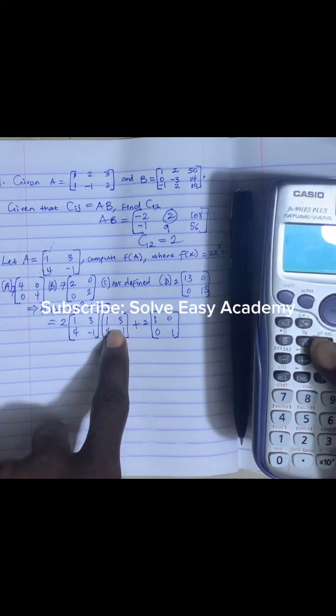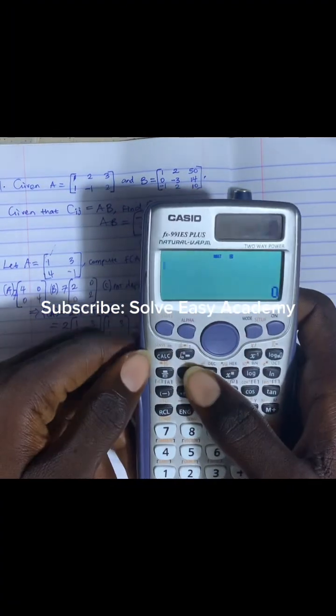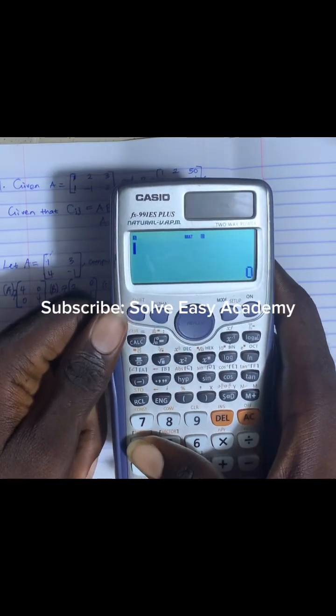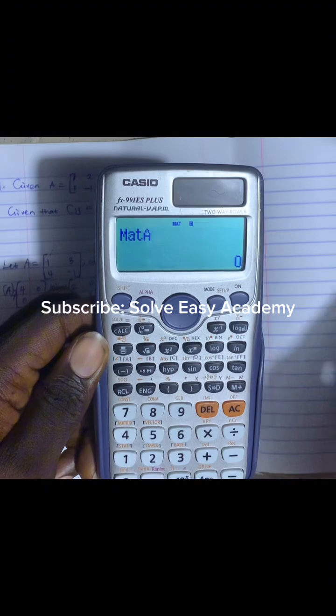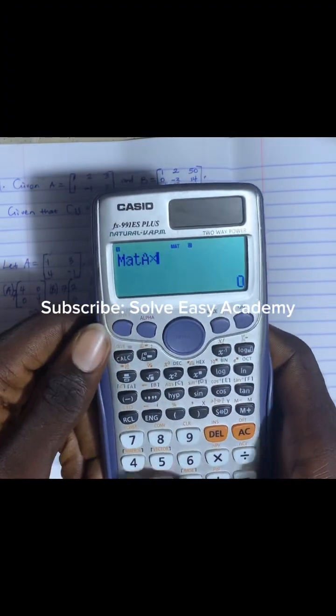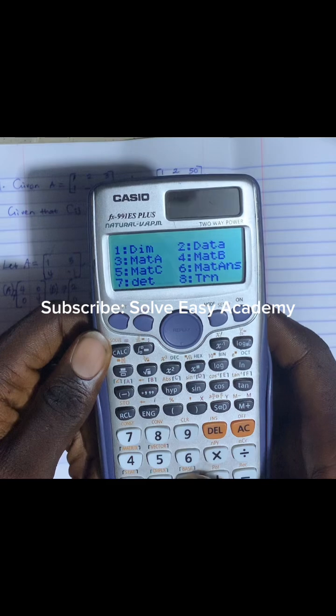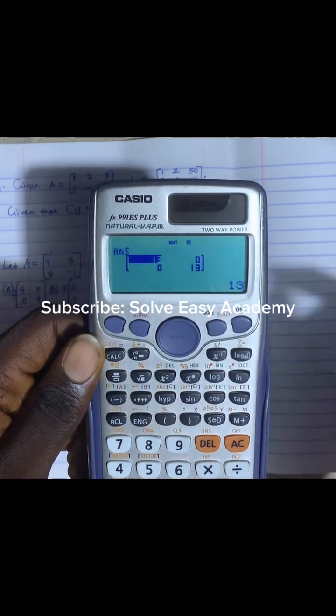Now let's find matrix A times matrix A because A squared means A times A. So that's matrix A times matrix A. We press shift, we press number 4, we have 3 matrix A, that's what is showing on our screen, times matrix A again. Shift matrix number 3, we have matrix A times matrix A.